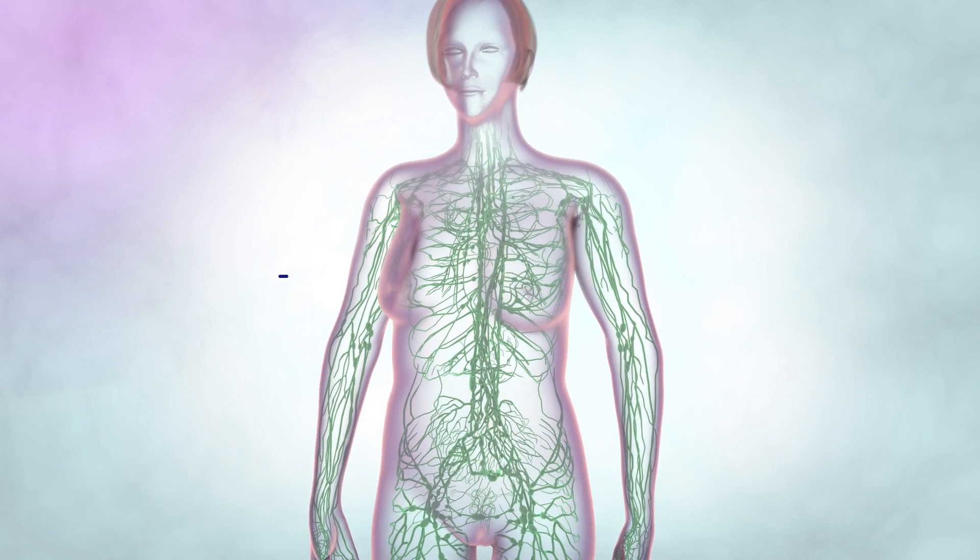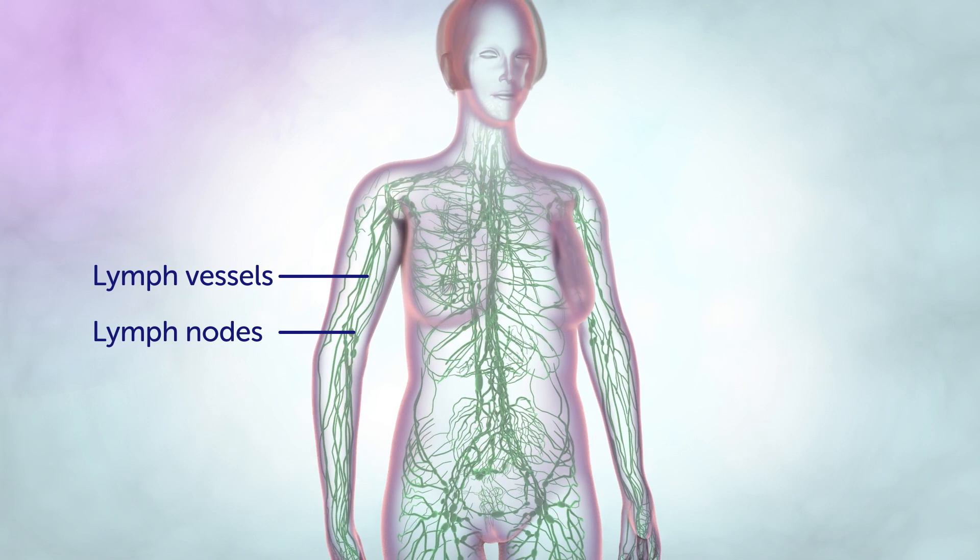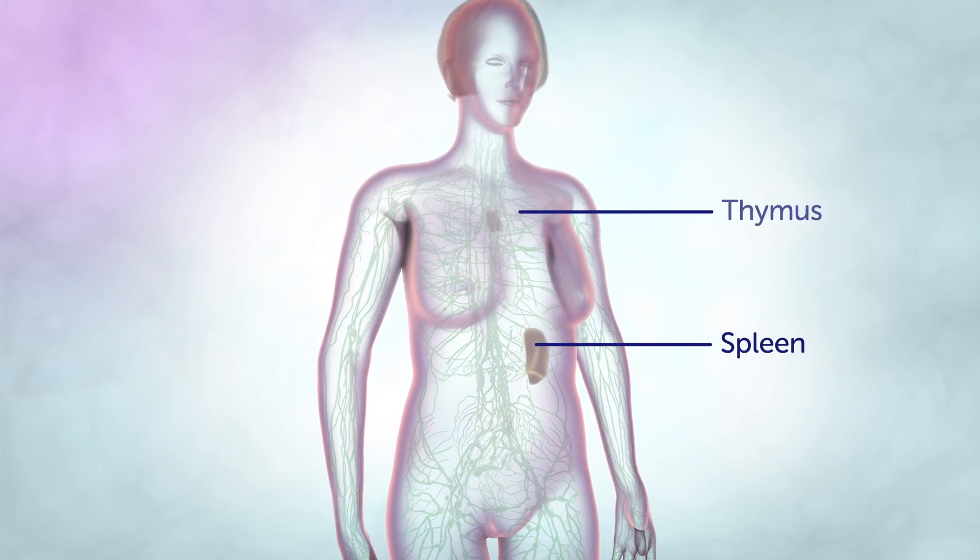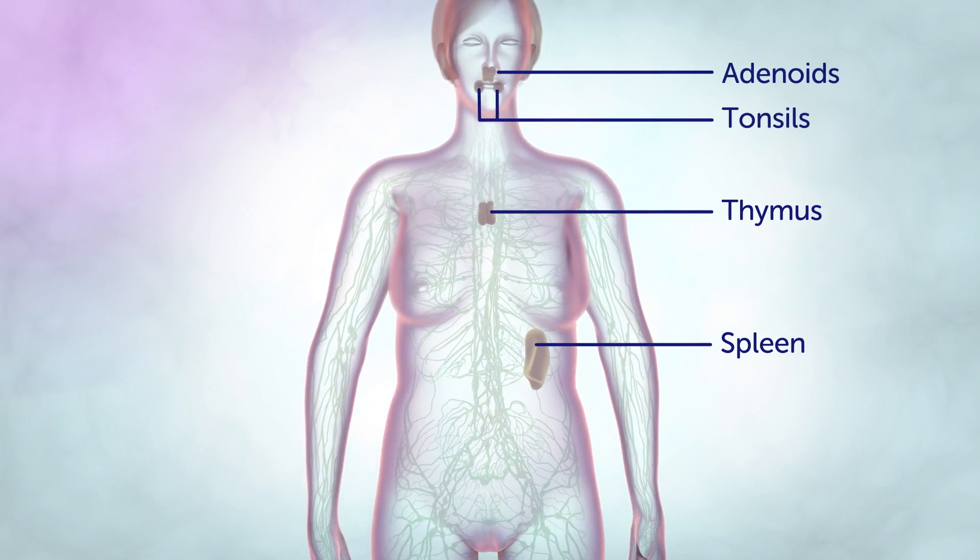It is a system of thin tubes called lymph vessels and lymph nodes or glands. These run throughout the body. The spleen, thymus, tonsils and adenoids are also part of the lymphatic system.